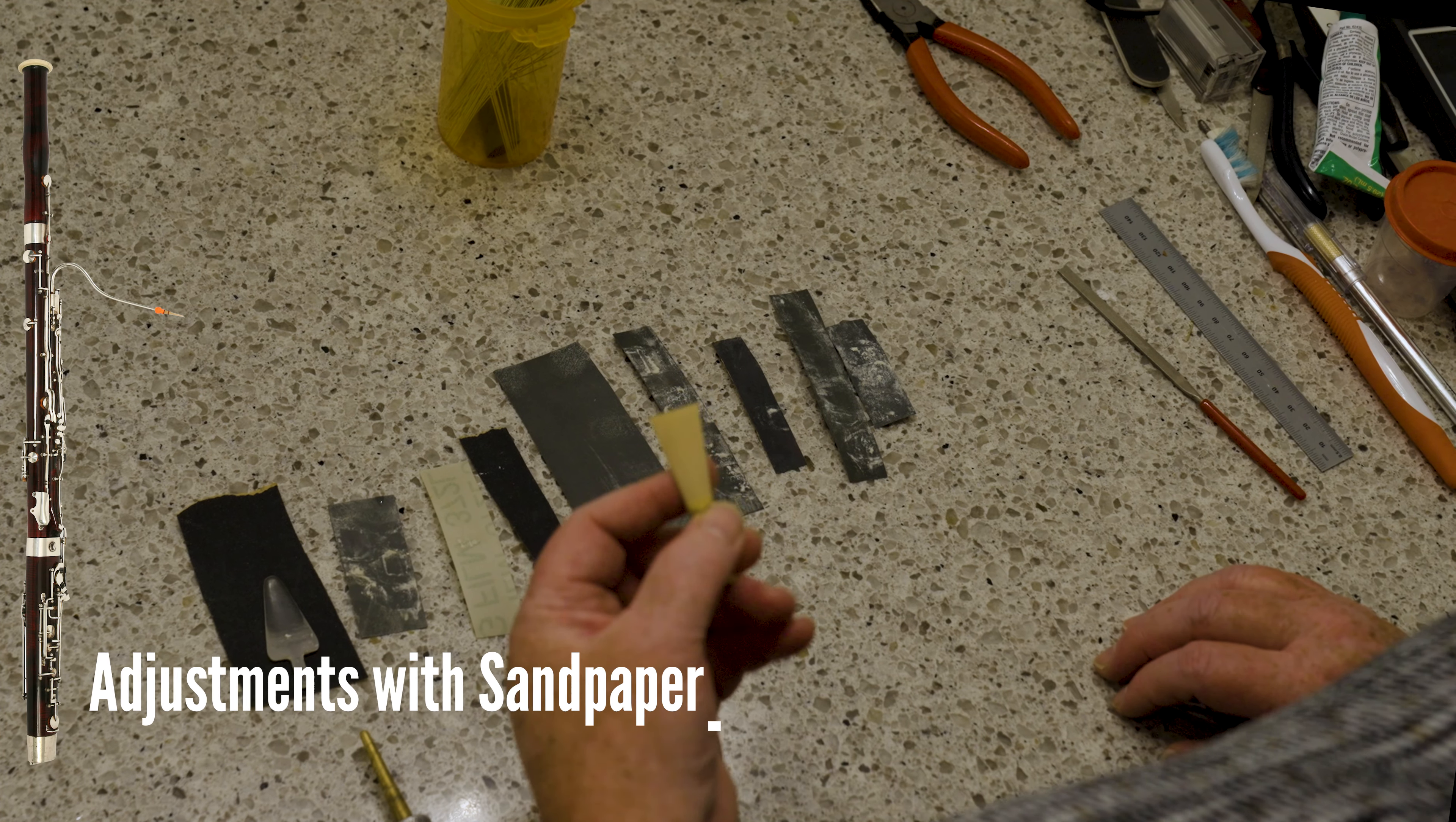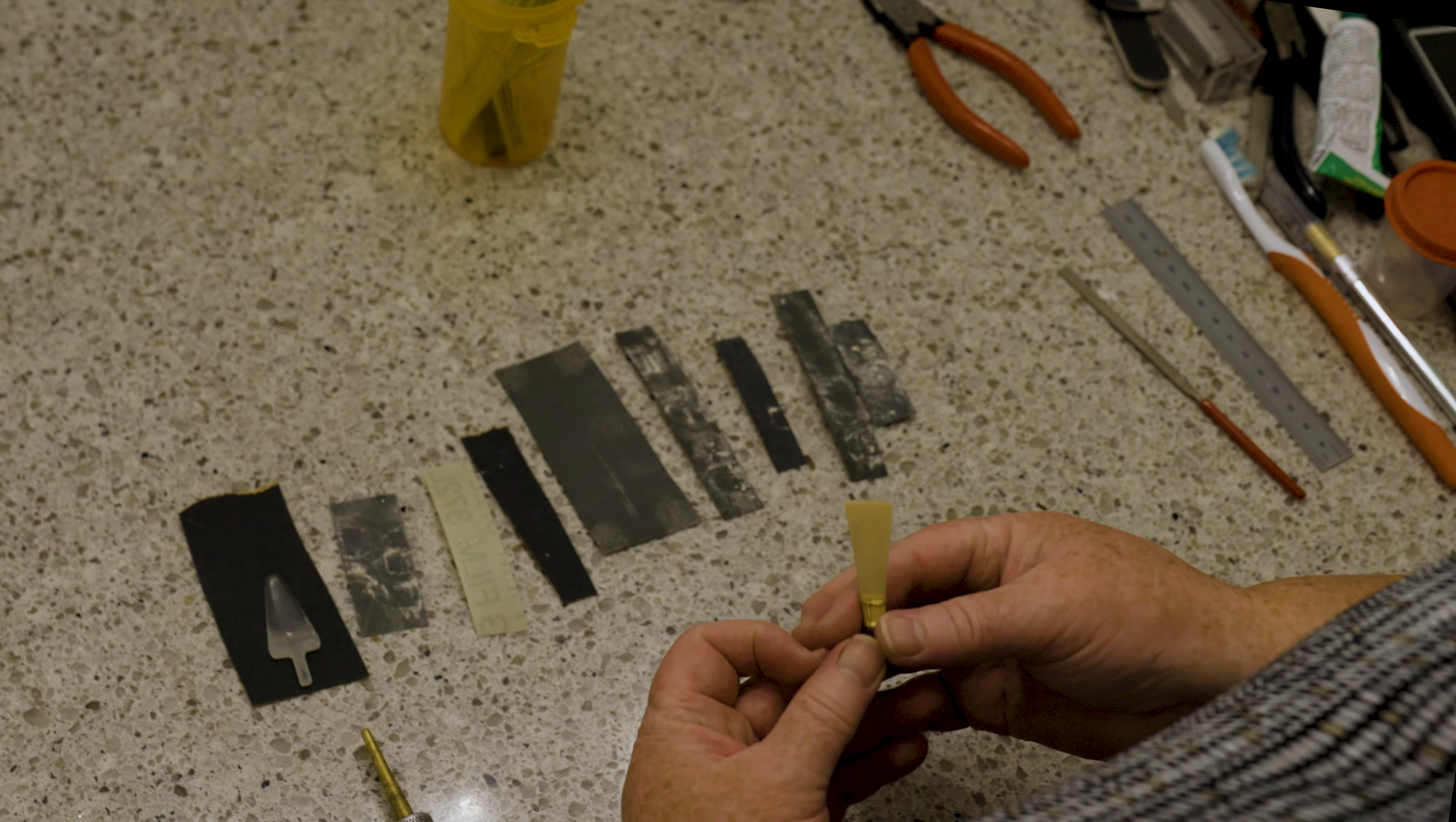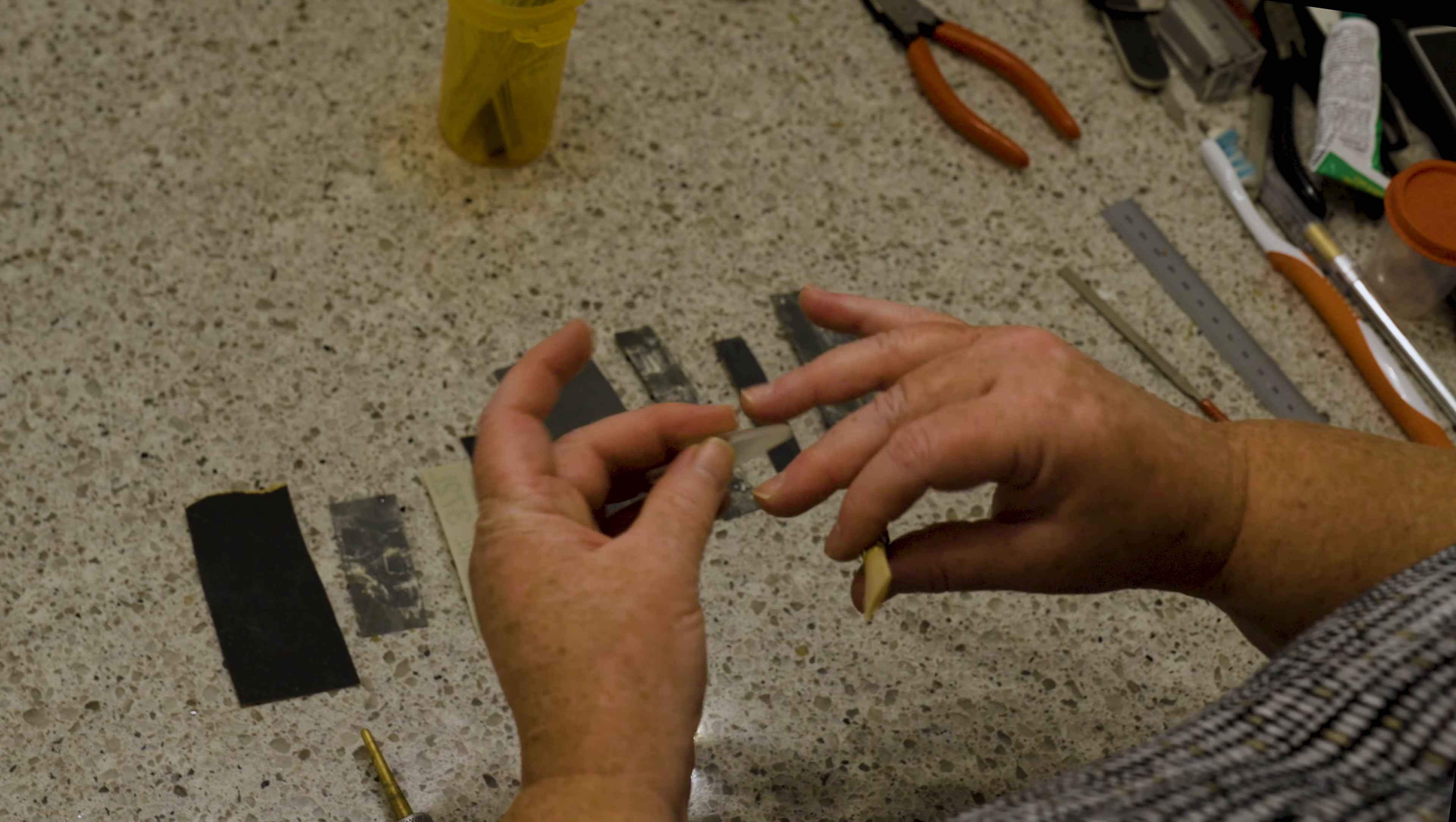All right, you might want to do some adjusting on the reed blades. Generally when I have a student that gets a new reed from the store, the blades can be pretty rough and that might feel uncomfortable on your lips. They might even be a bit uneven, and so I've just got some different grits of sandpaper here and I've got what's called a plaque, it's called the arrowhead plaque. You'll notice with this one it's got a little bit of what we call a belly, there's a little bit of thickness to it.